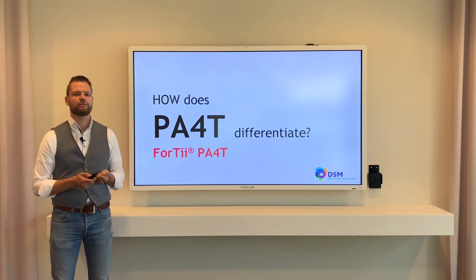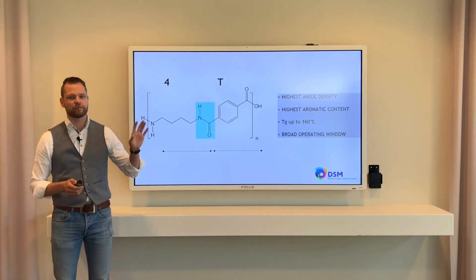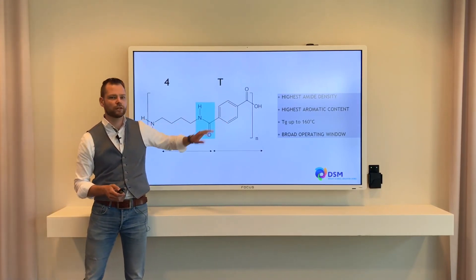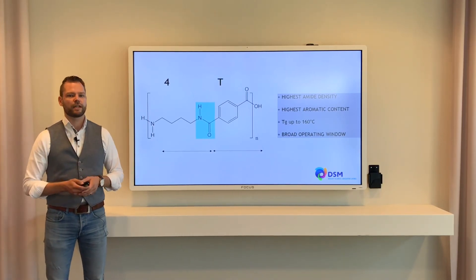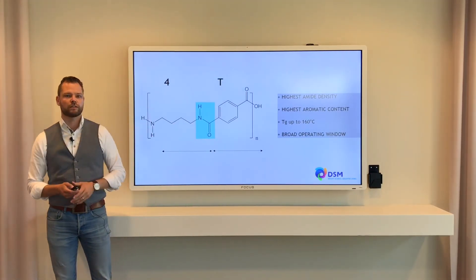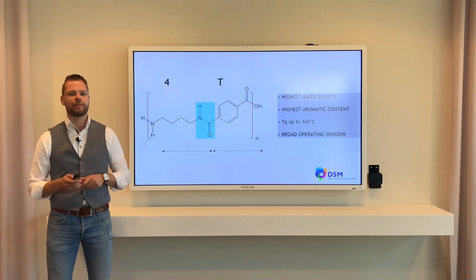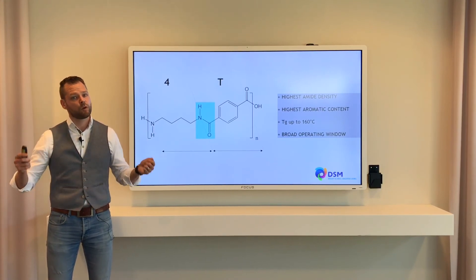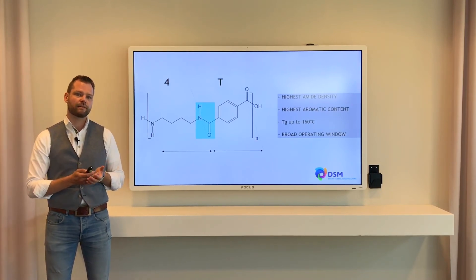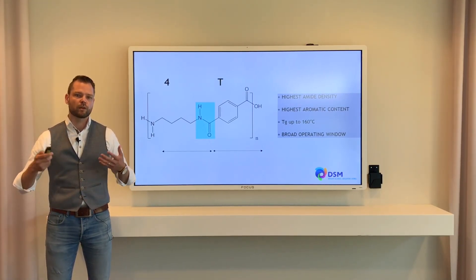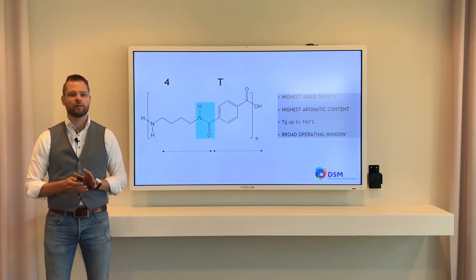How does a 4T differentiate from other PPAs like a 6T? Again, you see two different building blocks — a 4-carbon block and the ring structure, the T structure. In the middle, of course, the amide group you already know. Due to the relatively short 4-carbon block, the amide density of these materials is increased. They can form more hydrogen bonds and therefore achieve a higher strength. These materials also have the highest aromatic content, which is helpful for chemical resistance — the more ring structures, the better the chemical resistance. The material is also able to push the glass transition temperature to 160 degrees Celsius, further increasing the operating window.